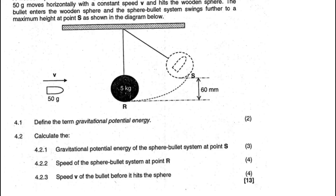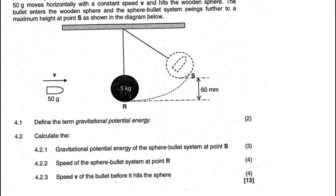Good day folks, here's a question on momentum and energy. This is question four from the Mpumalanga question paper in September 2017. It says a wooden block of mass 5 kg hangs stationary from a light string. A bullet of mass 50 grams moves horizontally with constant velocity and hits the wooden sphere.